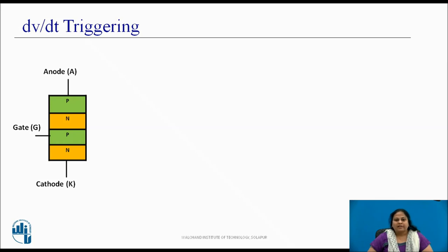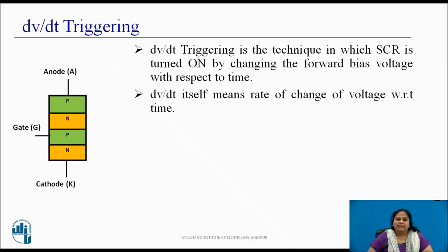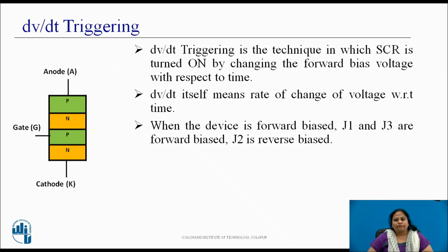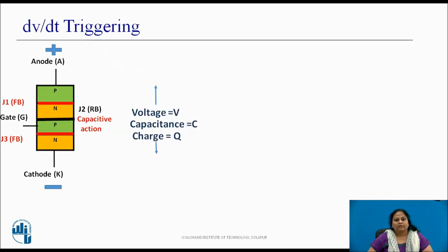These SCRs are called light activated silicon controlled rectifier and light activated silicon controlled switch. Next is dV/dt triggering method. It is a technique in which SCR is turned ON by sudden change in forward bias voltage across the device. dV/dt itself means rate of change of voltage with respect to time. When the device is applied with forward voltage, J1 and J3 are forward biased and J2 is reverse biased. This reverse junction J2 behaves like a capacitor due to the charge existing across the junction.